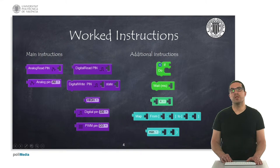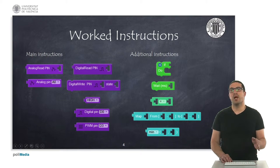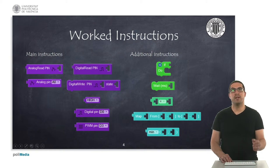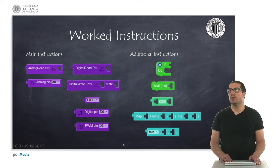Here we have the instructions we will work with in this presentation. We have some instructions for analog and digital reading — we saw these in previous presentations — which allow us to read the value of the potentiometer. We also have instructions for reading the value of a digital pin, or for setting and writing the value of a digital pin to high or low. We can indicate the pin number, and for special pin types we can use the PWM instruction.